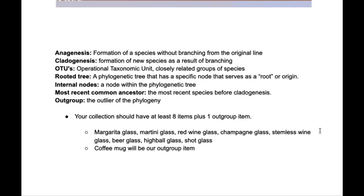We'll see cladogenesis, which is the formation of new species as a result of branching. OTUs are operational taxonomic units, which are closely related groups of species. We'll also see most recent common ancestors, which are the most recent species before cladogenesis. We will also see how the outgroup interacts with a phylogenetic tree, or rather does not.